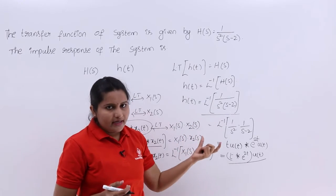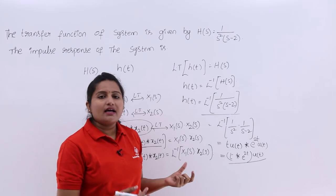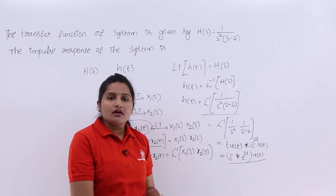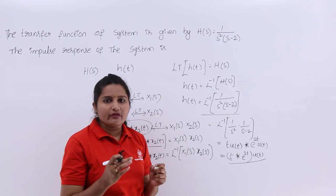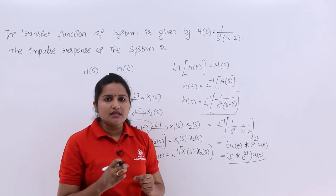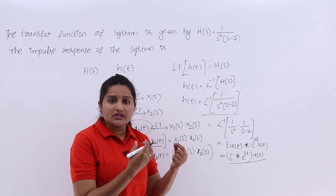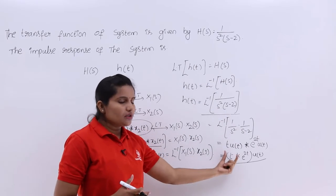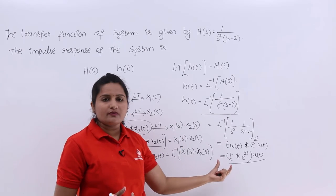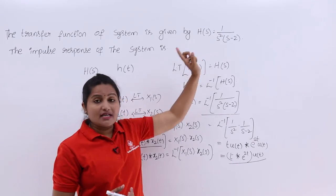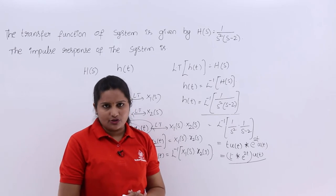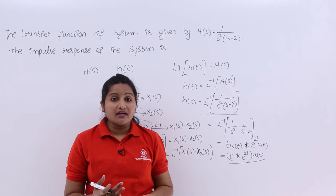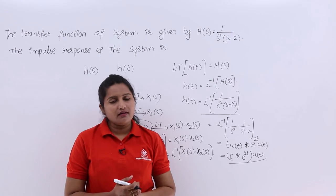I just applied the convolution property here. Whatever signals are convoluted in the time domain, their spectrums multiply in the frequency domain. Based on that property, I solved this problem and got the impulse response of the system where the transfer function was given in the s-domain. This is how we solve problems related to impulse response when the transfer function is given in Laplace transforms.